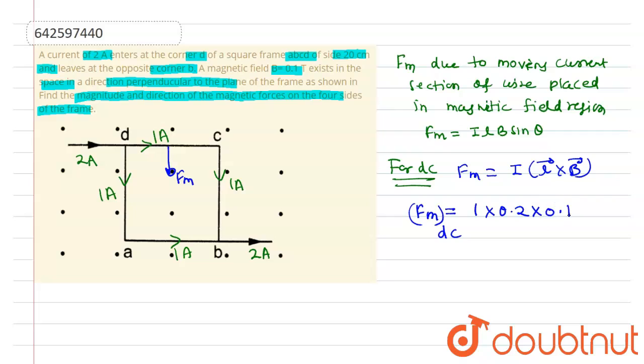Theta is 90 degrees as the displacement is in x direction and magnetic field is in perpendicular outward direction. This will be sin 90, so from here this magnetic force will be equal to 0.02 Newton.